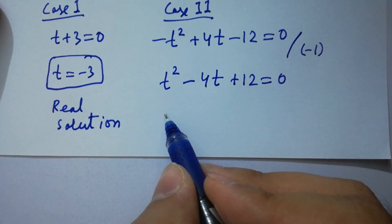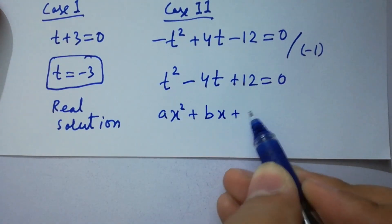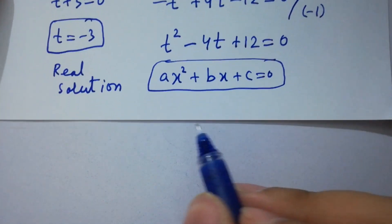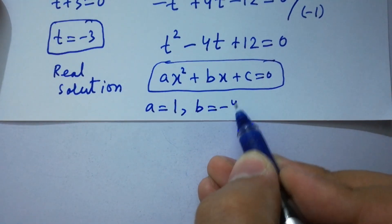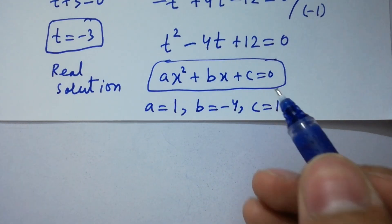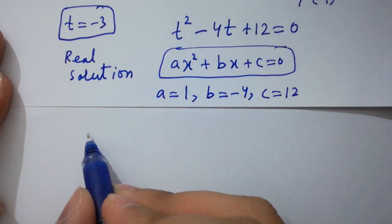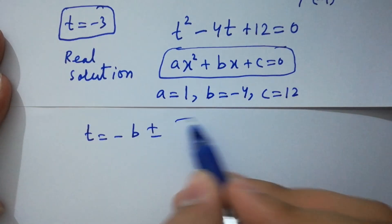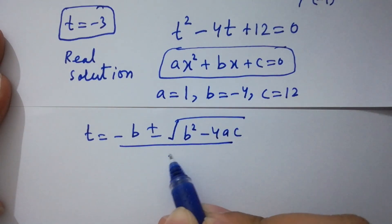This is a quadratic equation of the form ax-squared plus bx plus c equals 0. By corresponding values, we have a equals 1, b equals minus 4, and c equals 12. We now apply the quadratic formula: t equals negative b plus or minus square root of b-squared minus 4ac, all over 2a.